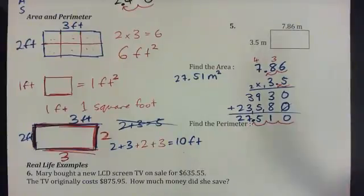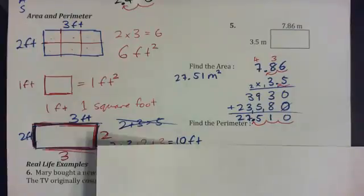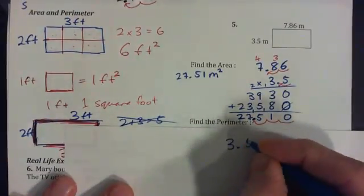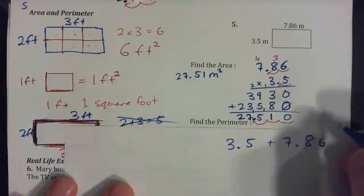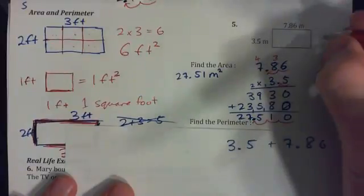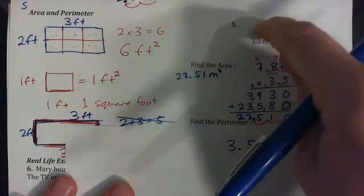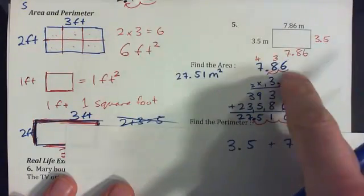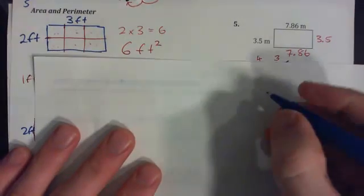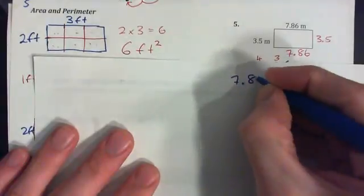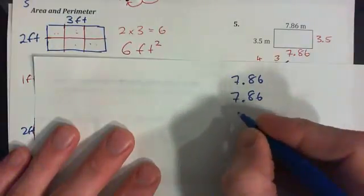So the perimeter of this box is not just 3.5 plus 7.86. It's 3.5 plus 7.86, but don't forget we have another 3.5 meters here and another 7.86 meters here. So we have to add up all of these four numbers. So the total perimeter for this guy is 7.86 added twice, and then 3.5 added twice.